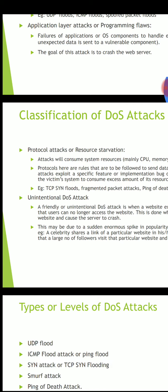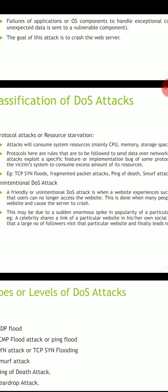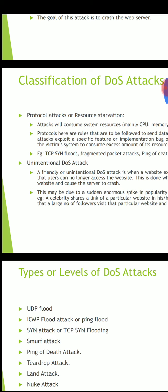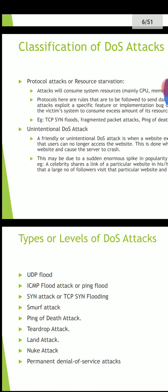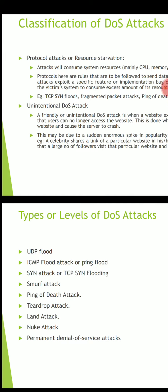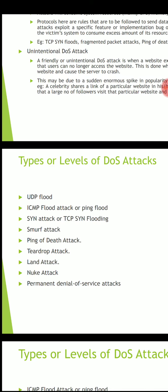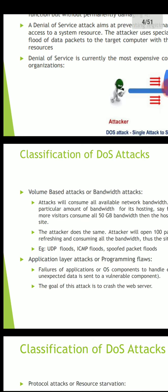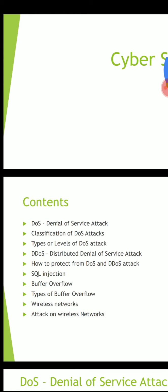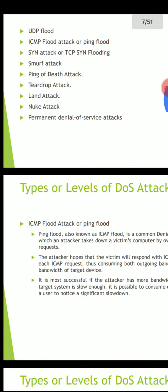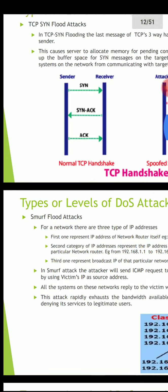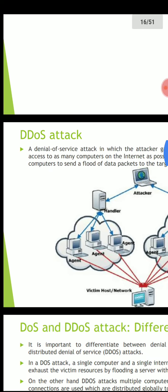In protocol attacks, the examples are TCP SYN, fragmented packet attack, ping of death, and smurf attack — these deal at different levels. We categorize them as levels or types of DOS attack: SYN attack, smurf attack, ping of death attack, teardrop attack, land attack, nuke attack, UDP flood attack. For all these, you have to explain in two to three lines at which level the attack happens. Then we go to DDOS attack.